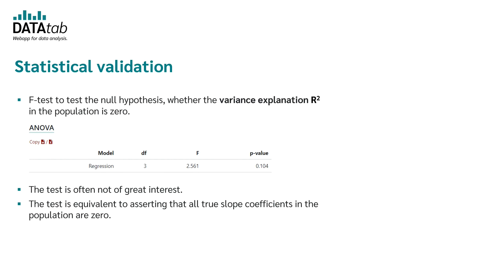In the second table, you find the statistical validation. Here an F-test is provided, which tests the null hypothesis whether the variance explanation R-square in the population is zero. In general, this test is often not of such great interest. The test is equivalent to asserting that all slope coefficients in the population are zero.